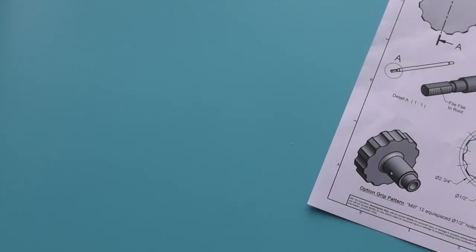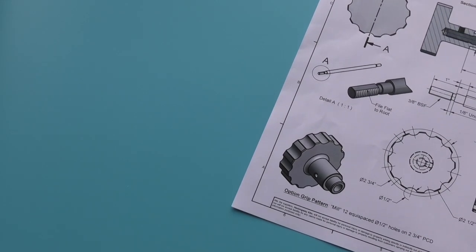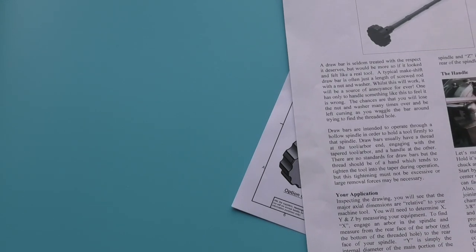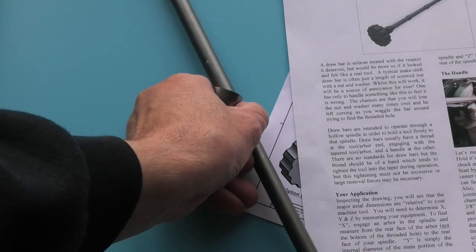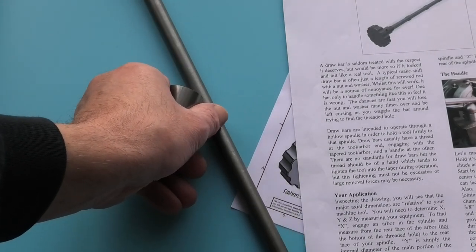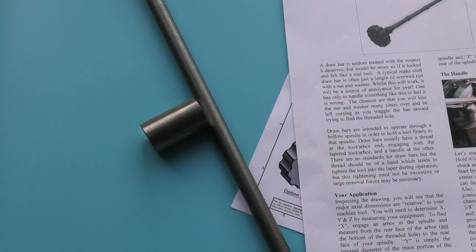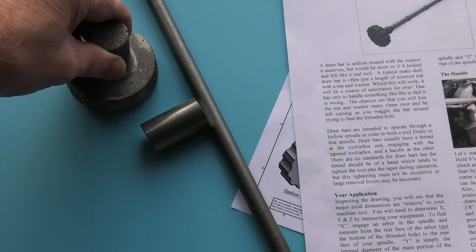What you get in the kit: you get a set of drawings, a sheet with instructions, steel bar for the actual drawbar, another piece of steel for the spacers, and a cast iron handle.